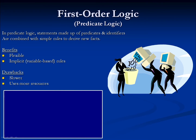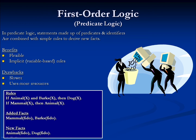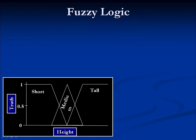Our next example utilizes rules that also have variables embedded in them. Capital X is the variable name. Our rules are: if animal X and barks X, then dog X; and if mammal X, then animal X. We then add the facts mammal-Phido and barks-Phido. When we add mammal-Phido, that allows us to draw the conclusion animal-Phido. Later, when we add barks-Phido, that allows us to draw the conclusion dog-Phido.